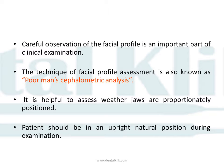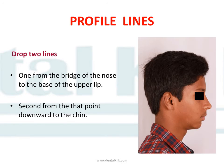While examining the facial profile, the patient should be in an upright natural position and is requested to look straight ahead. The head is positioned naturally, and the visual axis determines the natural head position. To assess the facial profile, two lines are dropped: one from the bridge of the nose to the base of the upper lip, and a second from that point downward to the chin.